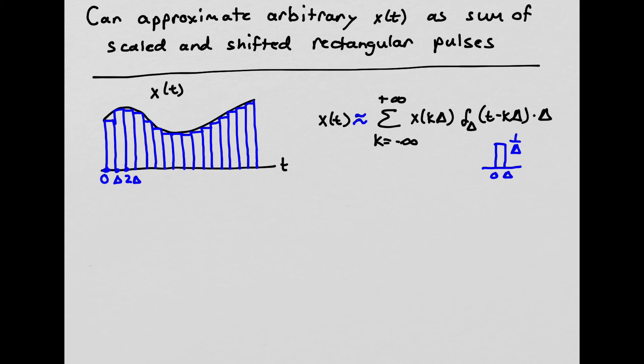as all these scaled and shifted deltas, scaled and shifted rectangular pulses. So here's the scaling. It's the height of the signal X of T at whatever point it is. Here's the little delta pulse. And I have to have an additional scaling by delta to correct for this, so that the height is correct. So I could approximate my signal X of T as a bunch of these scaled and shifted rectangular pulses.